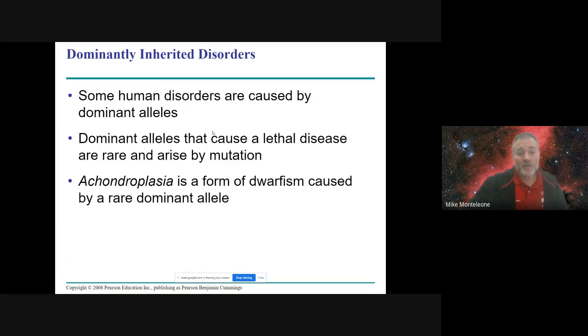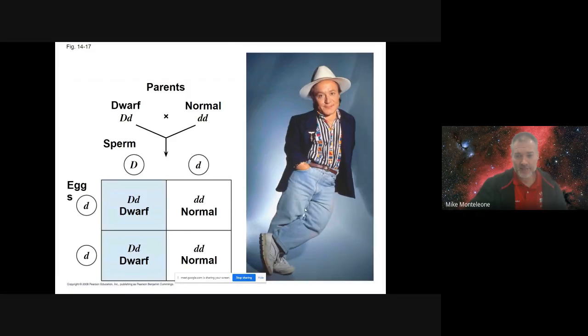Again not all disorders are recessive. There are some dominant ones. Achondroplasia is a form of dwarfism. And you can see that if two people have a baby where one is a dwarf with one dominant disease gene, it's much more rare to have two dominant disease genes but it could happen. If it mates with someone who's not a dwarf, you can see there's a 50-50 shot that they're going to have a kid with this type of dwarfism.